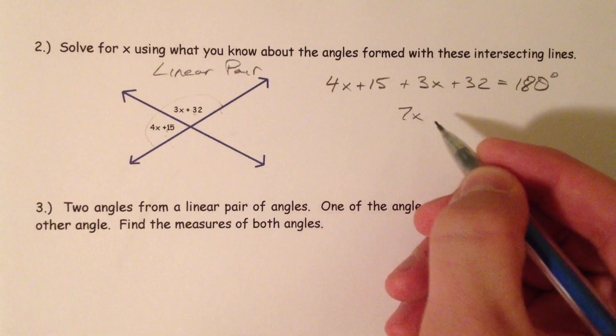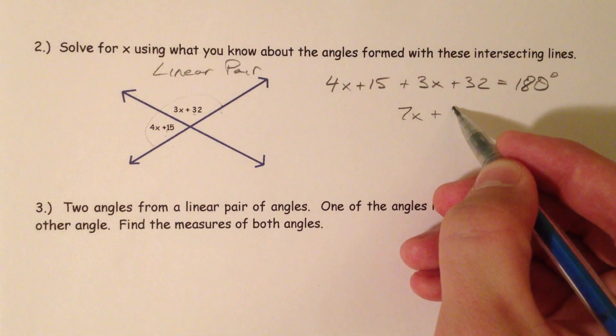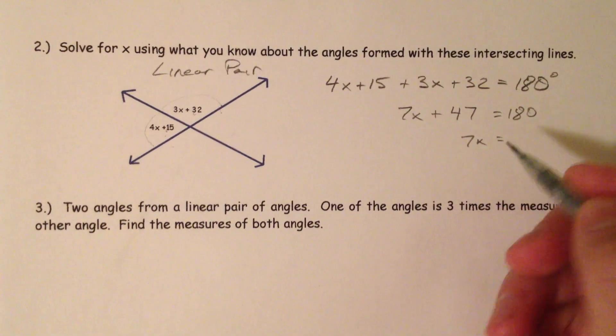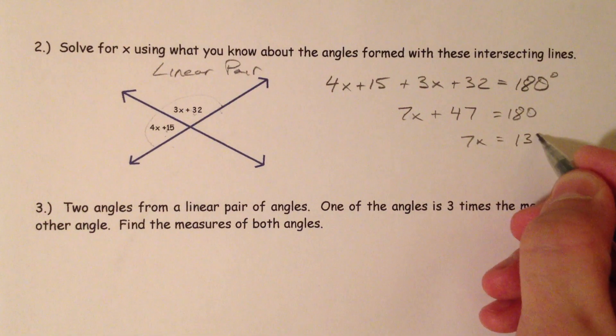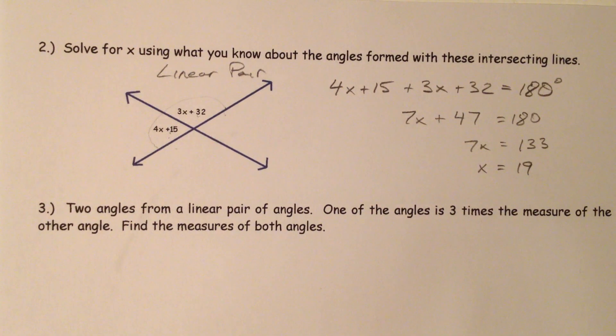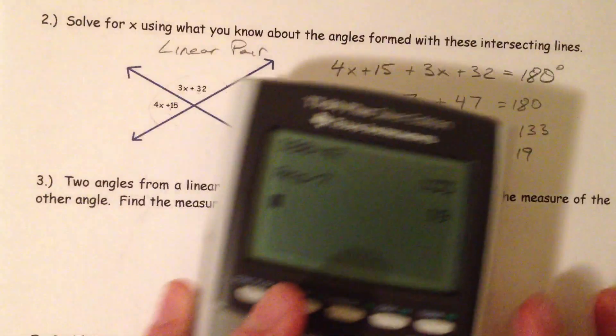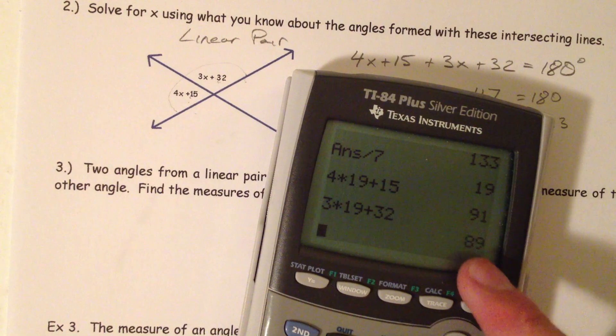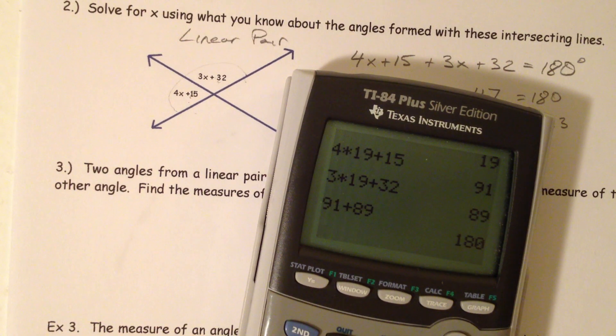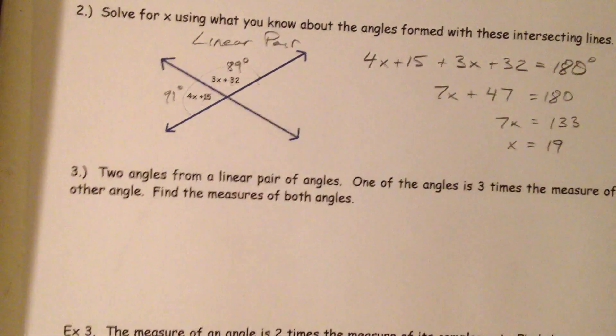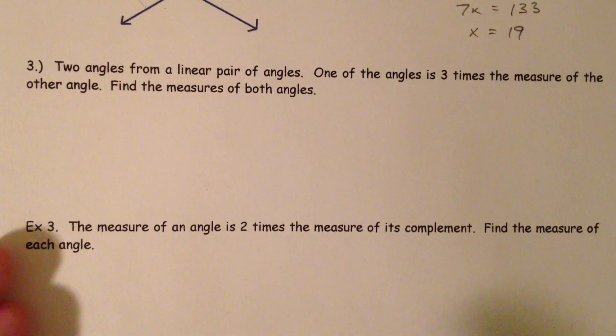So 4X and 3X make 7X. And 15 and 32 make 47. And so if you subtract 47, you get 133. And you divide by 7 and you get 19. Pardon me typing this into the calculator, I just don't want to mess it up. And just to double check it, 4 times 19 plus 15 is 91. And 3 times 19 plus 32, so 89 and 91 plus 89 is 180. And so this one is 91 degrees, this one is 89 degrees. And so it just acts as a good double check. It only asks you to solve for X, but we took it a step further to be able to check our answers.